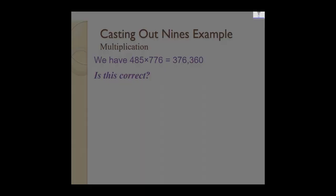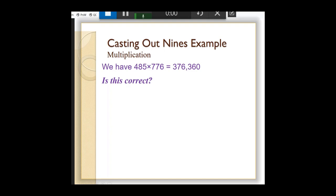I'd like to do this example again, but this time I'm going to use an even faster process. I look at the 485, and I look for nines, and I'm going to cast out nines. 4 and 5 are 9, so those get casted out, and I get 8.